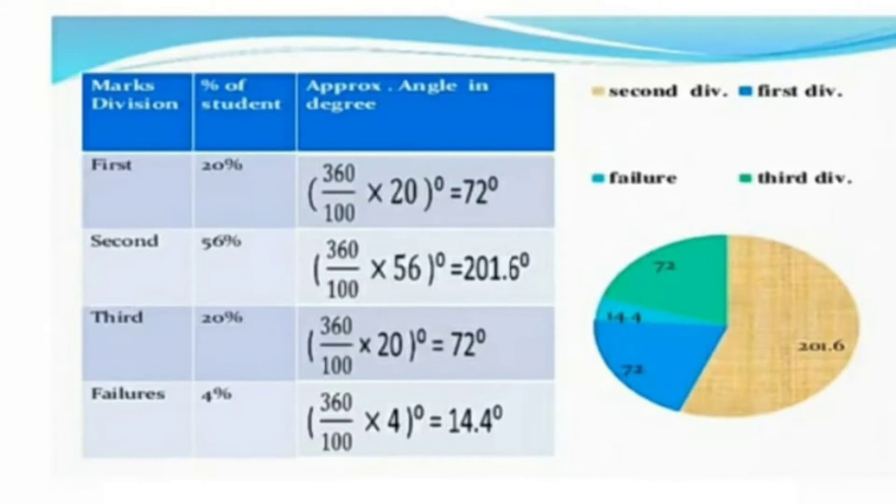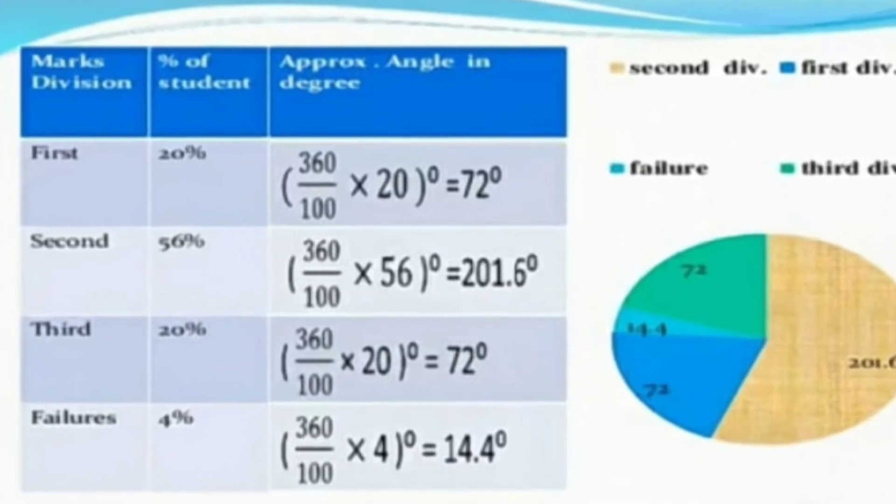Let's see how we can get the angle from the given percentage. For first class, 20% of students have scored first class. The formula is 360 divided by 100 into 20, which gives 72 degrees.